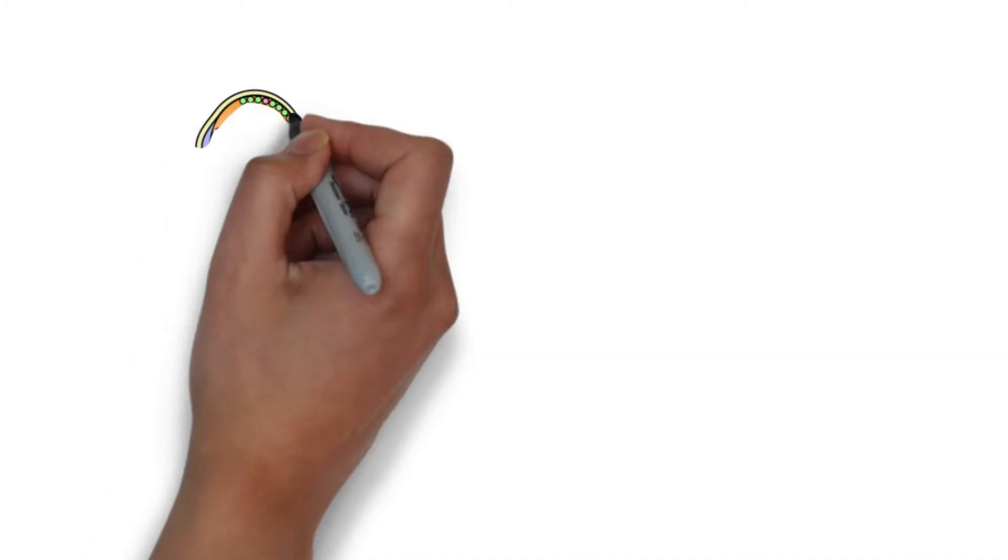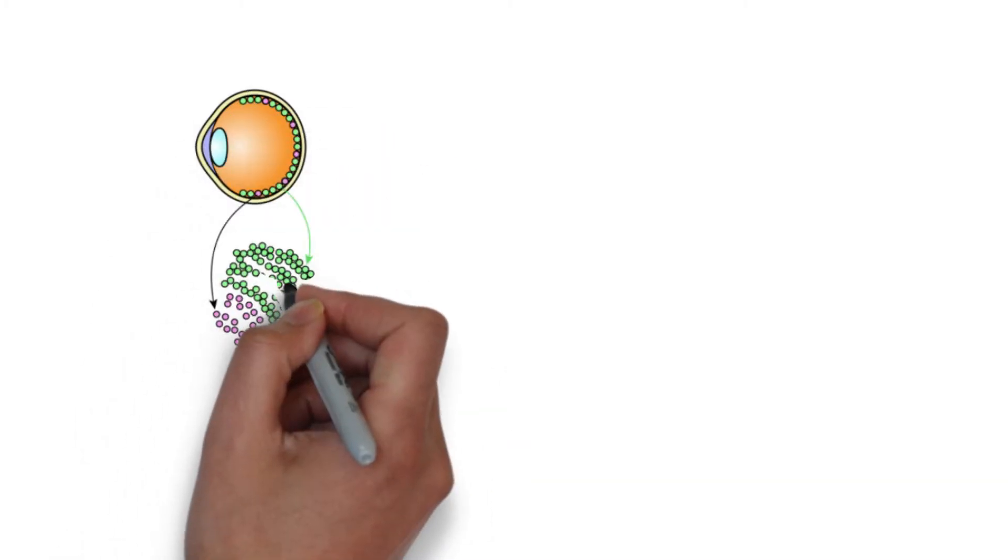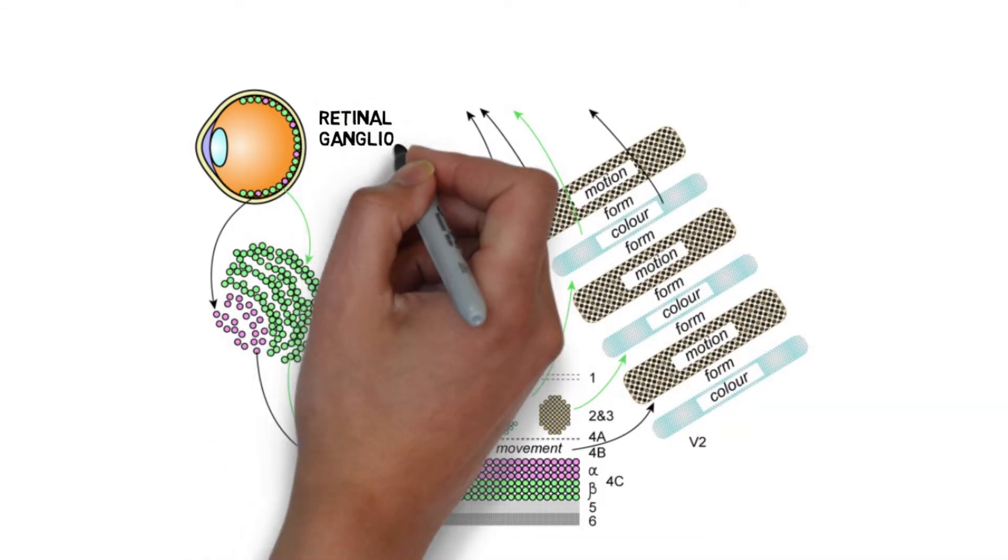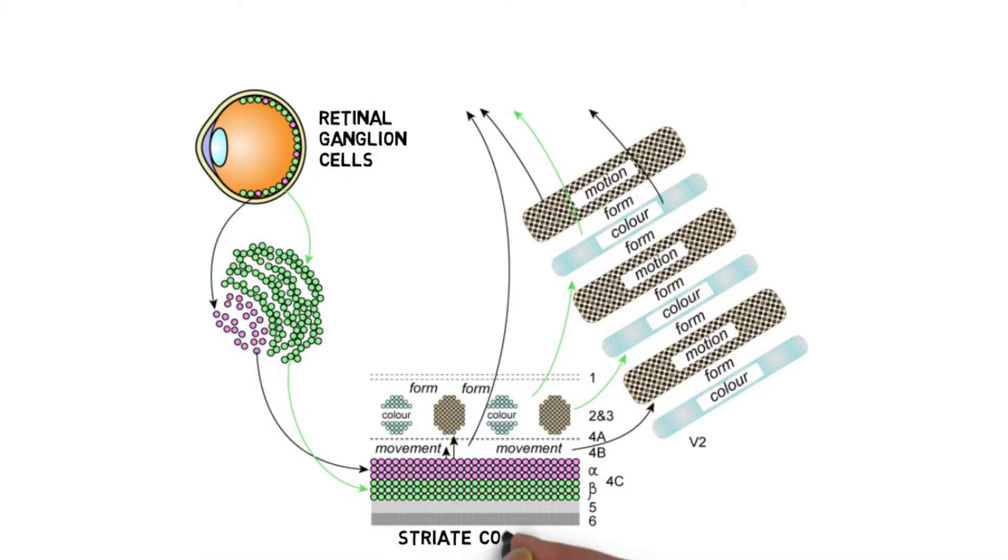The inputs to these extrastriate pathways have their origins either in magnocellular and parvocellular cells in the lateral geniculate nucleus, which remain separate at the striate cortex.